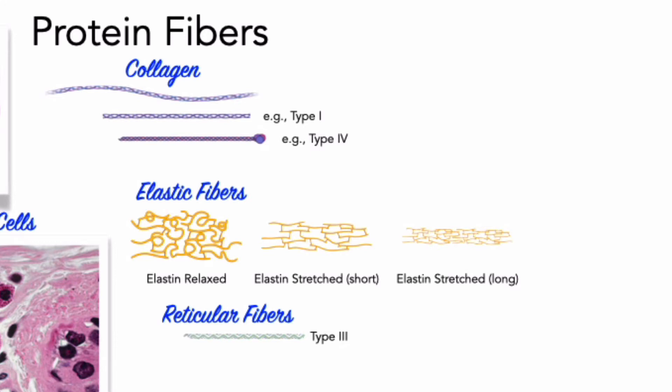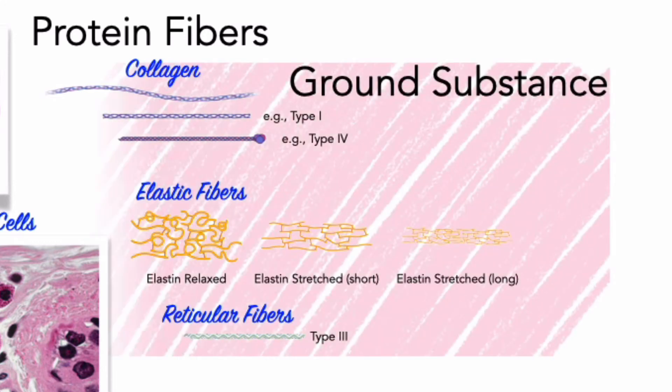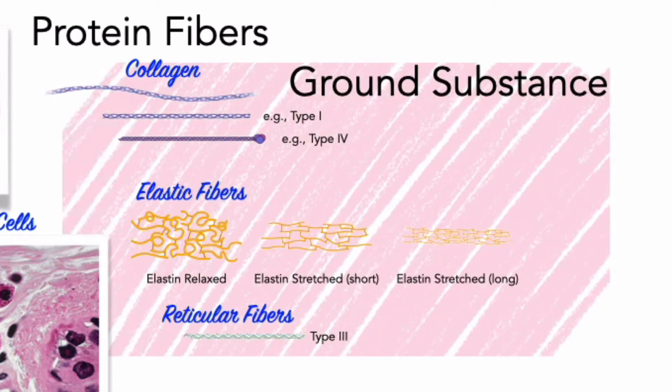Ground substance fills the space between cells and surrounds connective tissue fibers. In normal connective tissue proper, it is clear, colorless, and viscous. This viscosity can slow the movement of bacteria and other pathogens, making them easier for immune cells to catch. All of these cell types develop from an embryonic tissue called mesenchyme tissue.